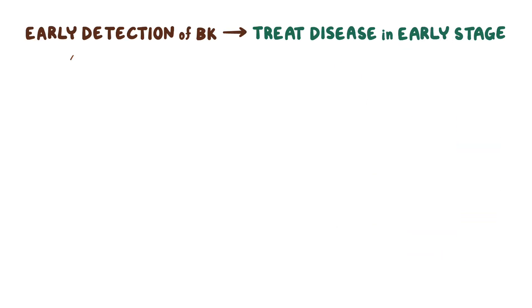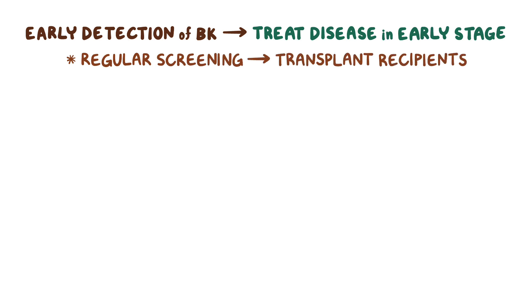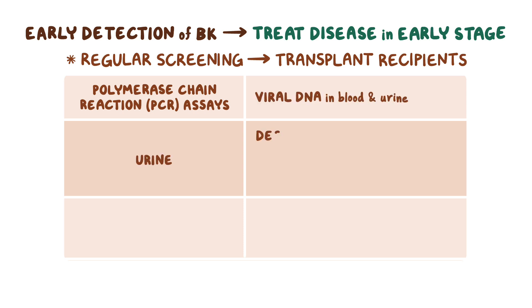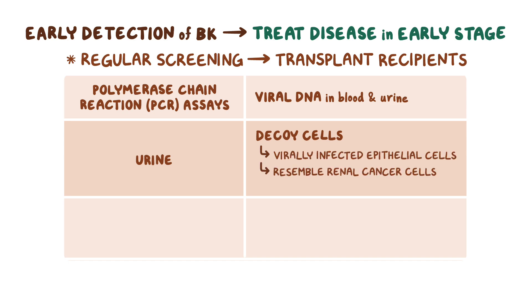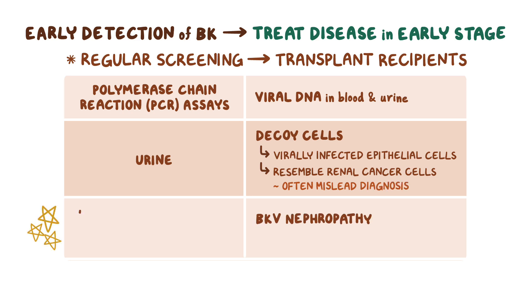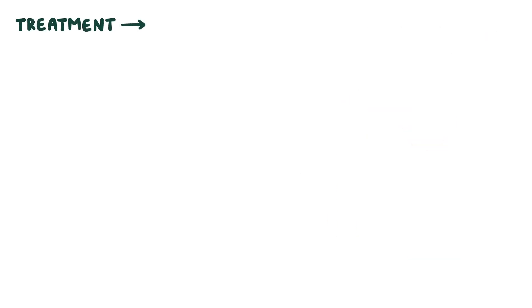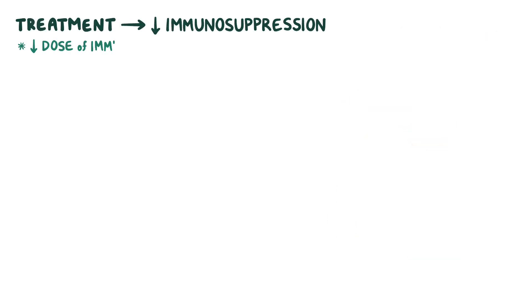Early detection of BK virus infection can help treat the disease in the early stage. Regular screening is done in transplant recipients with the help of polymerase chain reaction, or PCR, assays that look for viral DNA in blood and urine. Urine can also be tested for decoy cells. These are virally infected epithelial cells that resemble renal cancer cells and can often mislead the diagnosis. The gold standard test for diagnosing BKV nephropathy is immunohistochemical analysis of kidney biopsy specimens to look for viral antigens.